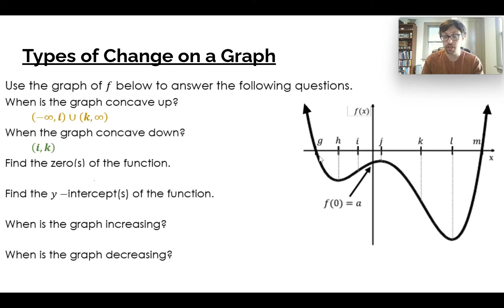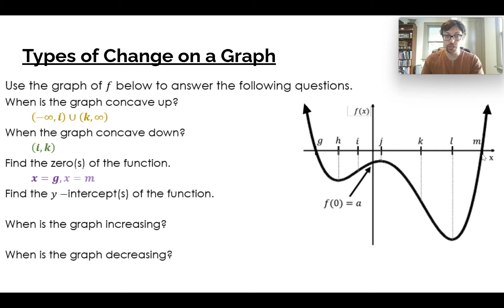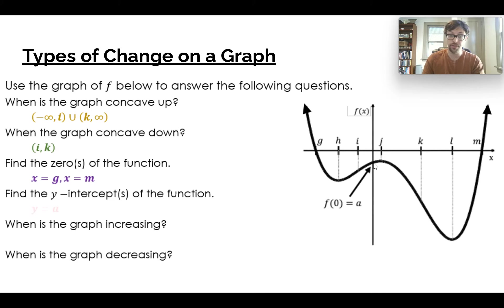Our zeros of our function, rather than being intervals, are just points. Zeros are where we cross the x-axis — zeros and x-intercepts mean the same thing. So x equals g and x equals m are our two places where we touch the x-axis. Our y-intercept — we should only ever get one — is f(0) = a. When we have an x value of 0, that is where we touch the y-axis.